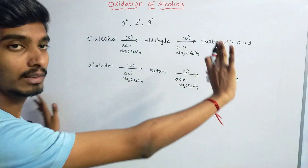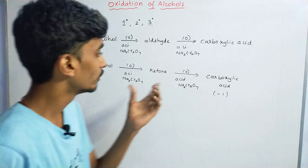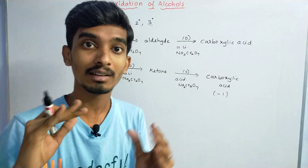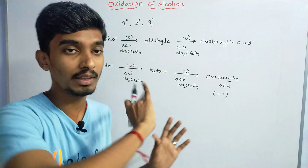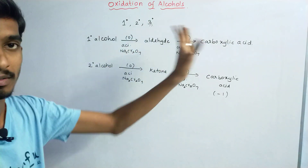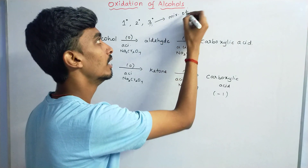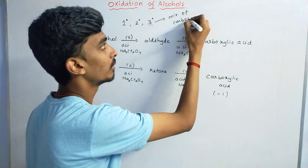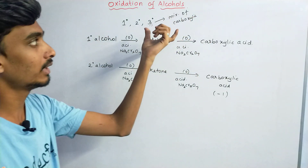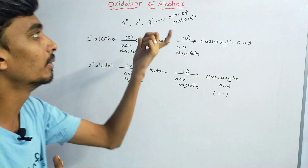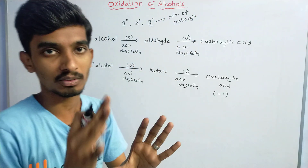Tertiary alcohol undergoes oxidation only under strong oxidizing agents at elevated, very high temperatures. Under these harsh conditions, tertiary alcohol gives a mixture of carboxylic acids.